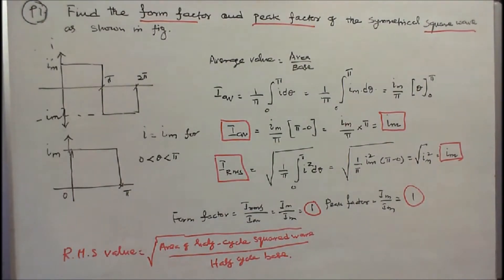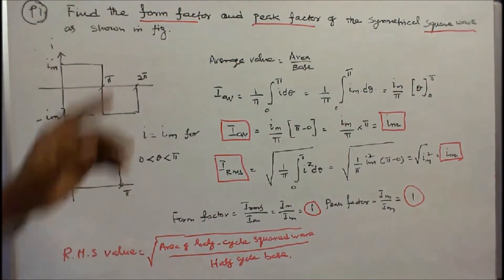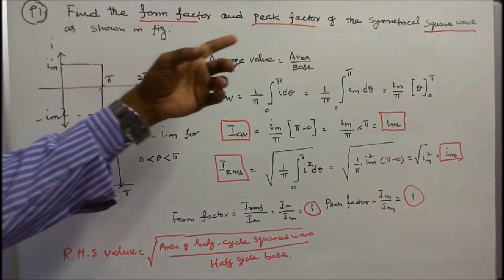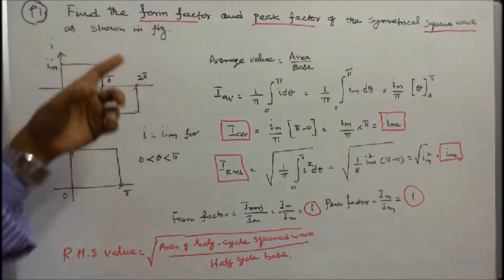In this class we calculate form factor and peak factor for various waveforms. Problem number 1: find the form factor and peak factor of the symmetrical square wave as shown in the figure.